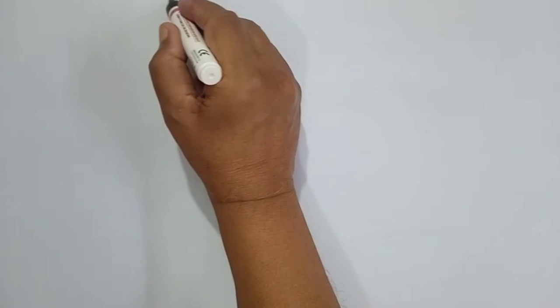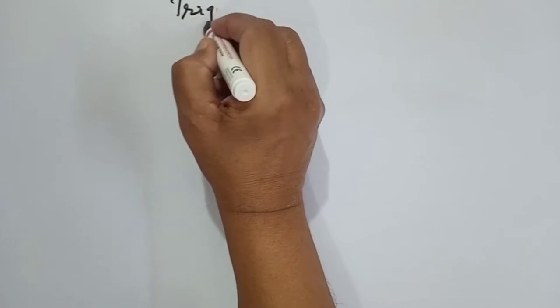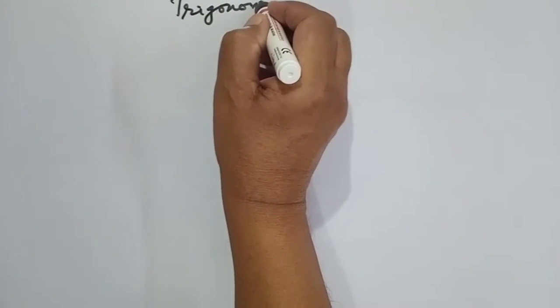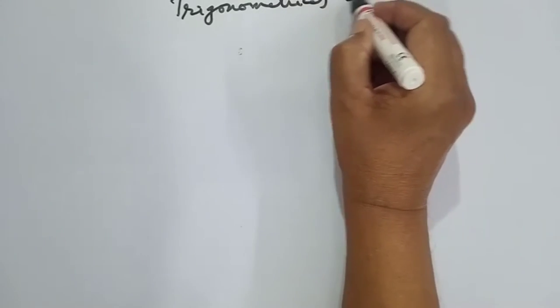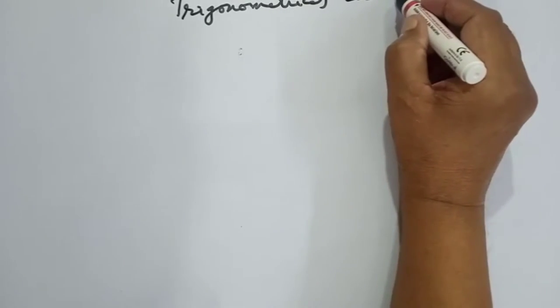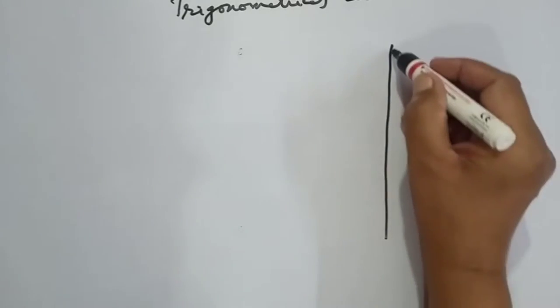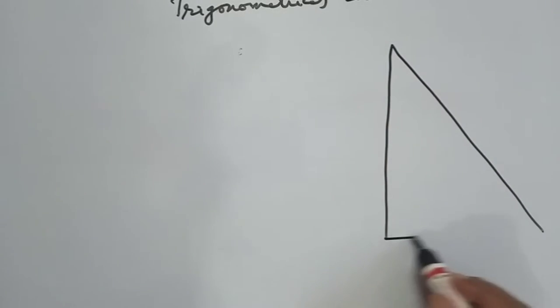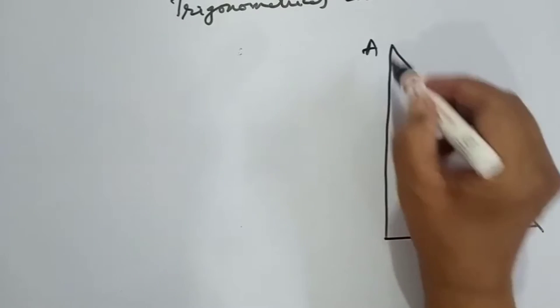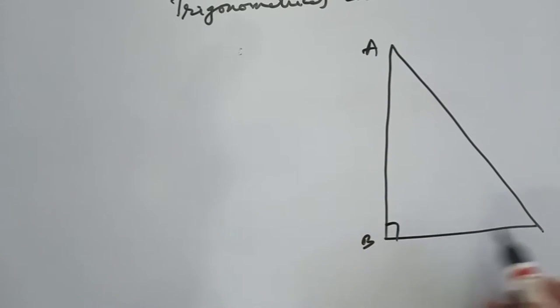We now take the next topic as Trigonometric Identities. We try to prove the three identities. Let us consider ABC is a right-angled triangle with C as theta.